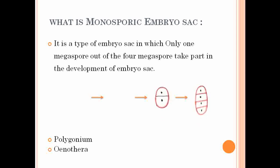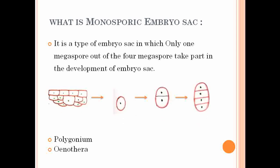The female gametophyte is developed from a mass of cells called sporogenous tissue. One of the cells enlarges its size by accumulating nutrients from the surrounding cells and becomes functional. This functional megaspore undergoes a first transverse division to form the dyad cell. This dyad cell undergoes one more transverse division to form the tetrad.